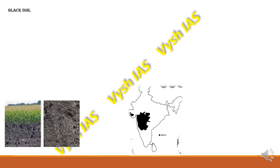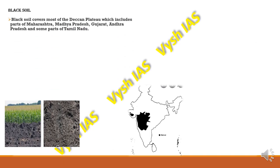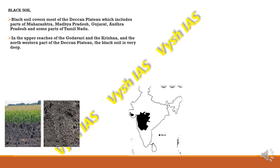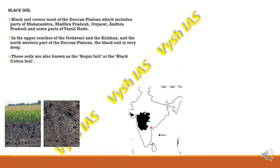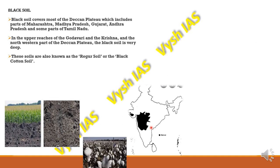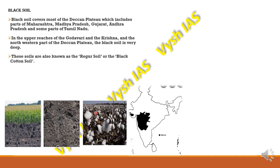Black soil is also known as regur soil or black cotton soil, because cotton is grown in it. Black soil covers most of the Deccan Plateau, including parts of Madhya Pradesh, Maharashtra, Andhra Pradesh, parts of Tamil Nadu, and Gujarat. In the upper reaches of the Godavari and Krishna river region and the north-western part of the Deccan Plateau, the black soil is very deep.